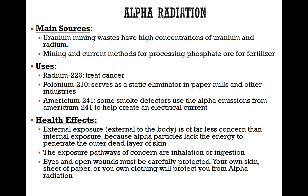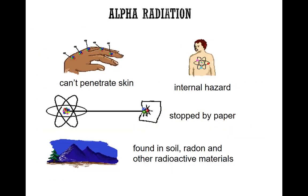Inhalation and ingestion are also concerns with alpha particles. Contaminated food can be a problem. Air that is full of alpha particles — if you're breathing that air — can also cause problems if you're very near the source. In summary, alpha particles can penetrate the skin, cause internal hazards, can be stopped by a piece of paper, and are found in soil, radon, and other radioactive materials.